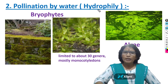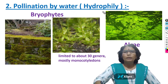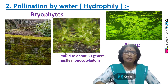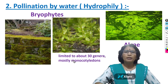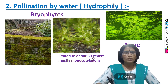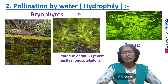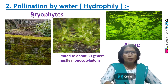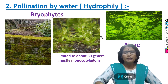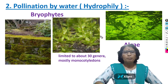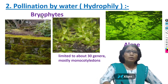Now I will teach you about hydrophily. Hydrophily means pollination takes place by water. Usually, hydrophily is limited to about 30 genera. These plants mostly belong to monocotyledons. Hydrophily is present in bryophytes, algae, pteridophytes, and some water plants.